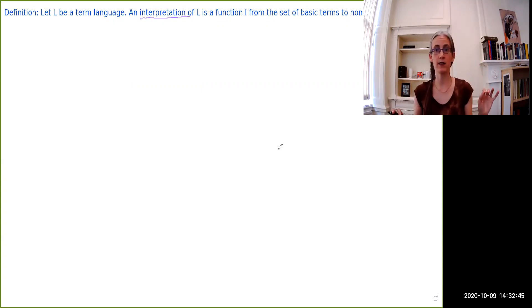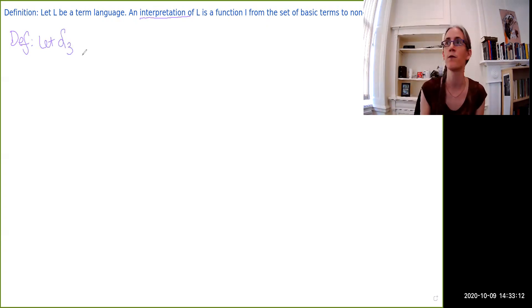However, we get to write it down in a fancy way so it makes it look all slick and professional. For instance, we had the informal idea of a language that had E and H and D and O for elves and dwarves and hobbits and orcs and all of these things. Well, let's do a slightly simpler version of this. So definition, let's L3, because it's the third language that I've introduced to you, be a term language consisting of just three categoromatic terms.